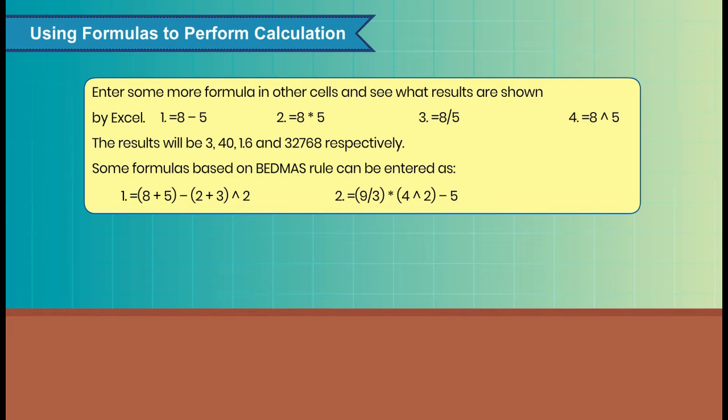Enter some more formula in other cells and see what results are shown by Excel. 1 equal to 8 minus 5, 2 equal to 8 multiplied by 5, 3 equal to 8 divided by 5, 4 equal to 8 exponentiation 5. The results will be 3, 40, 1.6 and 32768 respectively. Some formulas based on BEDMAS rule can be entered as well.